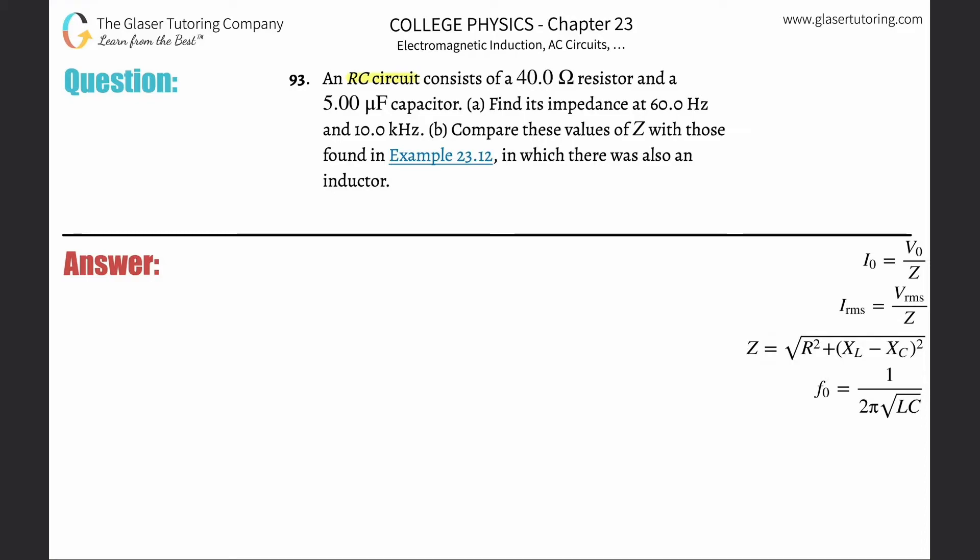Number 93: An RC circuit consists of a 40 ohm resistor and a 5 microfarad capacitor. Letter A: Find its impedance at 60 hertz and 10 kilohertz. Impedance has units of ohm but uses the variable Z.